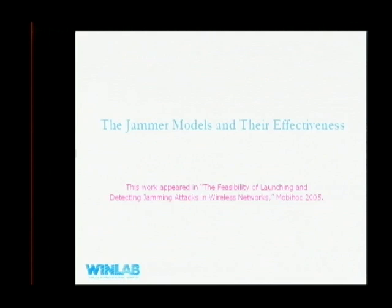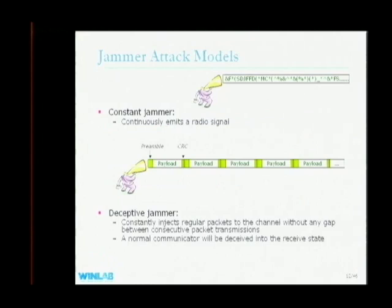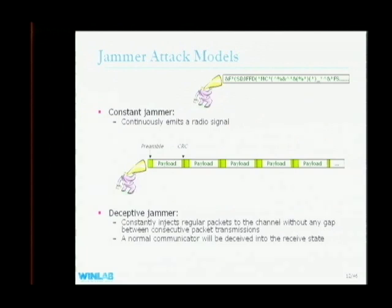Since our ultimate goal is to understand the jammer, we start by investigating how many types of jamming models we can build and how effective they are. In total, we came up with four jammer models covering both intentional and unintentional interference. The first is the constant jammer, which continuously sends out random bits. Since a legitimate device always waits until the channel is idle before transmitting, the constant jammer prevents any legitimate device from grabbing the channel. You can think of it as an unintentional interferer constantly sending things.